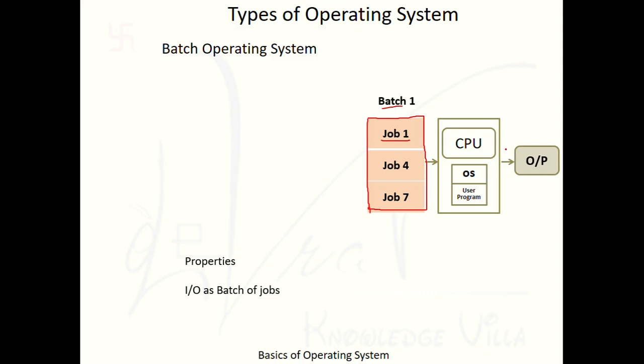Similarly, we will get the output as a batch. The second property is input and output through an operator. This means an operator is responsible for producing the input. Let's see what the role of the operator is.